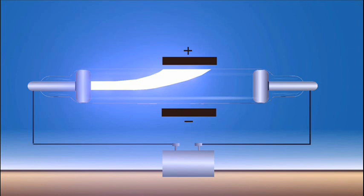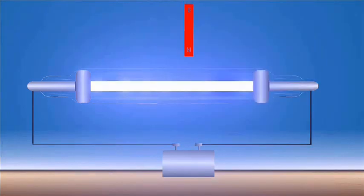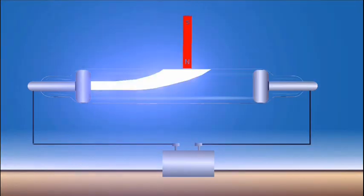The same thing happens when a magnetic field is produced near the cathode ray tube. The cathode ray gets deflected.